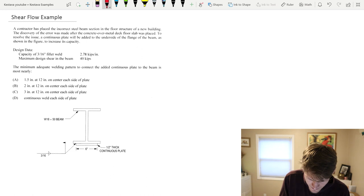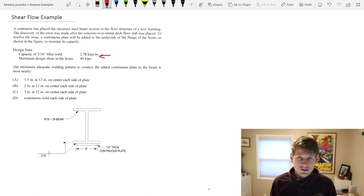We're given the capacity of the fillet welds so we don't need to do any calculations of the welds per the steel manual. Ultimately we are tasked with determining how much weld we need to sufficiently attach the plate to the underside of the wide flange.